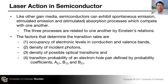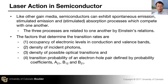Like any other gain medium, semiconductors can exhibit spontaneous emission, stimulated emission, and absorption. These three processes are in play at any given time, and the interplay between them determines the actual light emission characteristics of any material. The factors that determine these transition rates include: first, the occupancy of electronic levels in the conduction and valence bands — you need electrons in the conduction band and holes in the valence band for light emission. Second, the density of incident photons, since stimulated emission is induced by an incident photon.